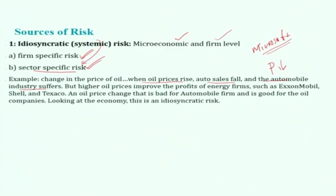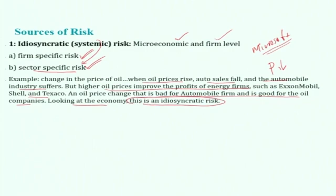This kind of risk affects sectors differently — it affects one sector badly but benefits another. For example, higher oil prices improve the profits of energy firms, including Shell and ExxonMobil. So an oil price change that is bad for the automobile firm is good for the oil company. From an economic perspective, this is idiosyncratic risk affecting particular sectors of the economy.